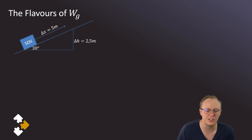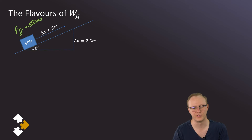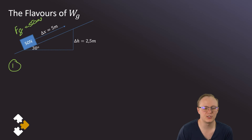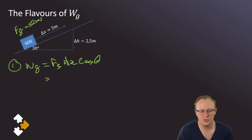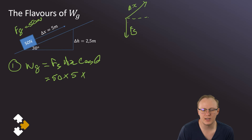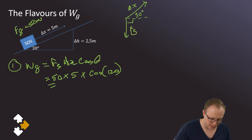Let's calculate the work done by gravity on a 50 N object using all three methods. Method 1: Wg = Fg · Δx · cosθ = 50 × 5 × cos120°. The displacement is up the slope and gravity is downward, giving a 90° + 30° = 120° angle between them. So 50 × 5 × cos120° = −125 J.